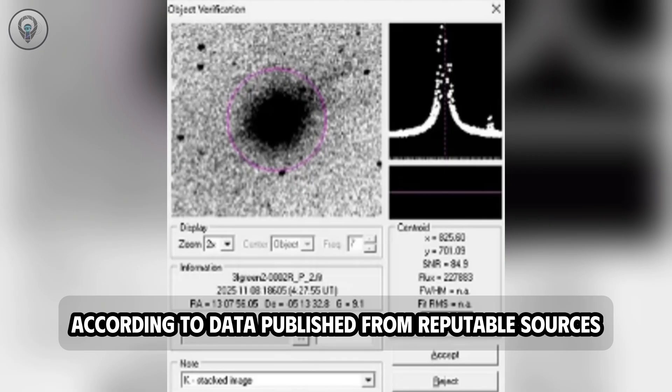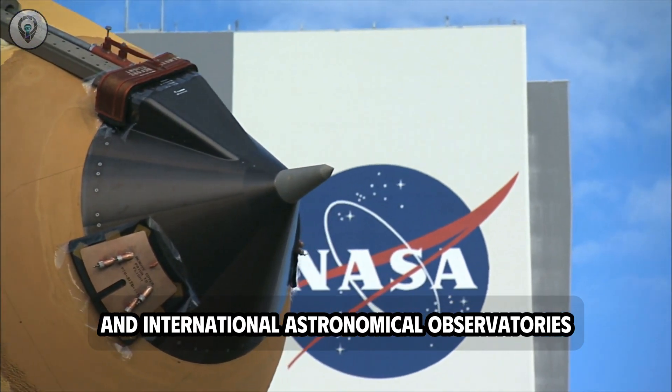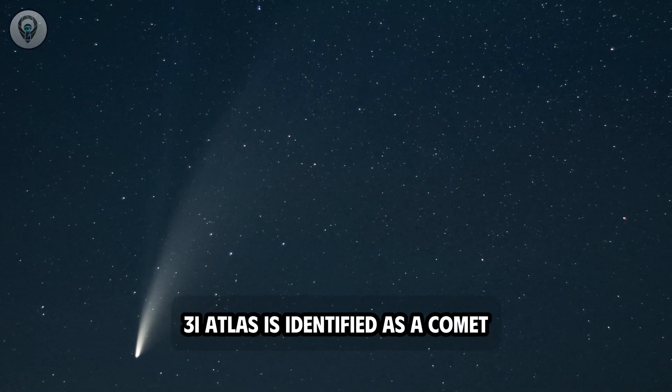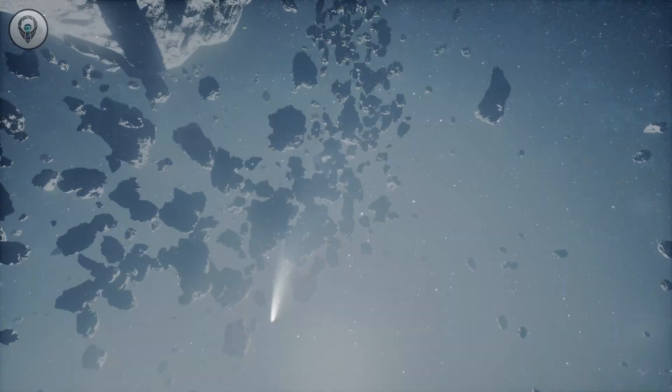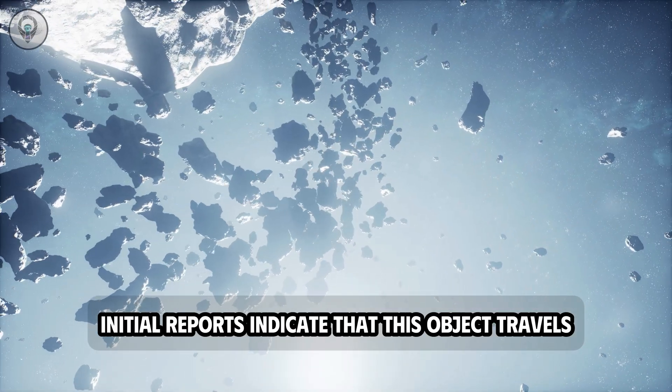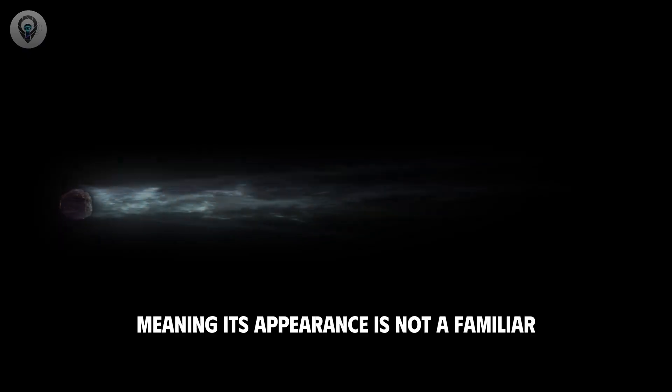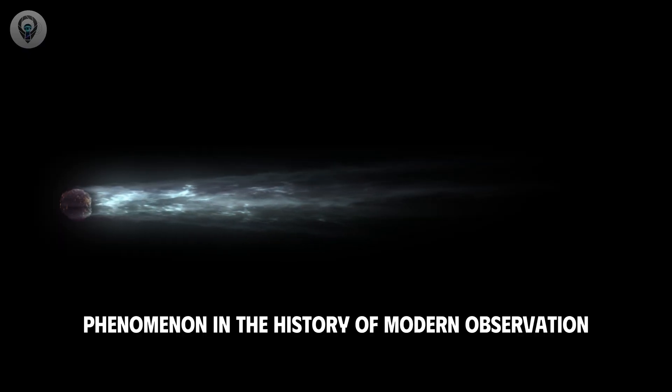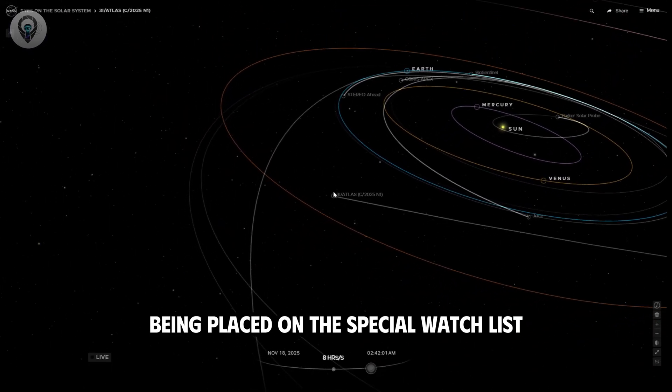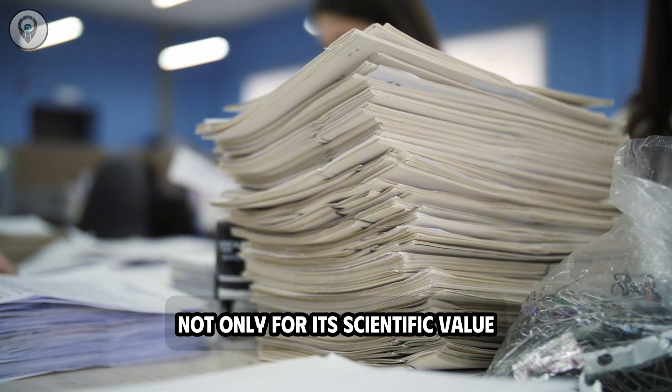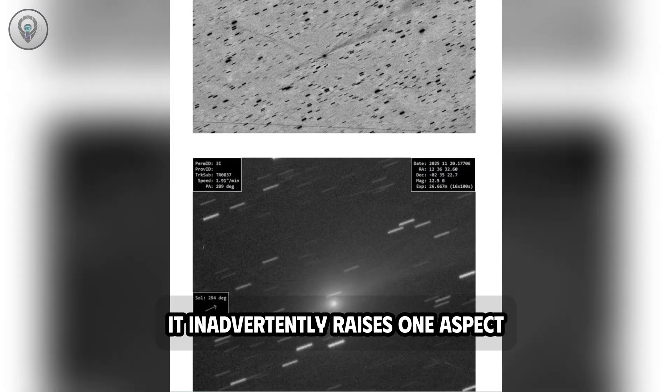According to data published from reputable sources such as NASA and International Astronomical Observatories, 3i Atlas is identified as a comet with a long and exceptionally rare orbit. Initial reports indicate that this object travels in an orbit spanning thousands of years, meaning its appearance is not a familiar phenomenon in the history of modern observation. This rarity quickly led to Atlas being placed on the special watch list, not only for its scientific value, but also for the profound questions it inadvertently raises.